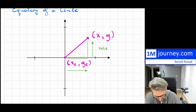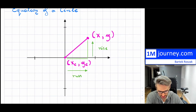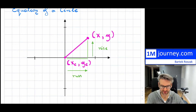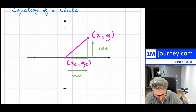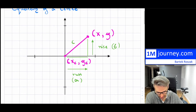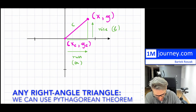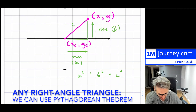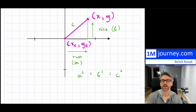So if this is my rise and this is my run, if I know these I can of course go back to the hypotenuse equation. Let's say this was my A and this is my B right here. So this would have been my C. And for any triangle, we know that A squared plus B squared is equal to C squared. That's simply using the hypotenuse or the Pythagorean theorem.